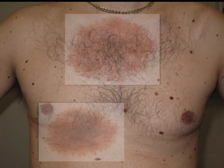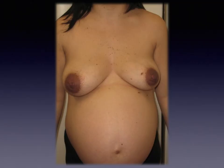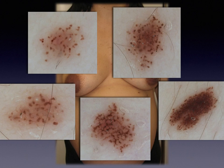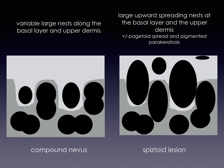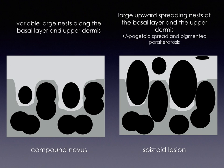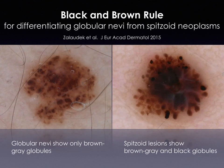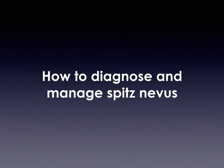Here is a patient with many nevi showing globules at the periphery, and a pregnant woman with multiple compound nevi with brown globules. Another patient shows globules of different colors — brown, black, and gray — which is characteristic of a spitzoid lesion. Compound nevi show variable nesting along the basal level and upper dermis, while spitzoid lesions show large upward nesting. The black and brown rule differentiates globular nevi — showing only brown or gray globules — from spitzoid lesions, which show brown, gray, and black globules.